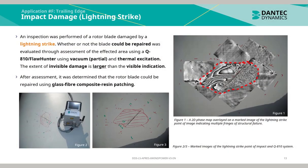Impact damage caused via a lightning strike to the trailing edge: an inspection was performed of a rotor blade damaged by a lightning strike. Whether or not the blade could be repaired was evaluated through assessment of the affected area using a Q810 floor hunter with vacuum partial and thermal excitation. The extent of visible damage is larger than the visible marked indication. After assessment, it was determined that the rotor blade could be repaired using glass fibre composite resin patching. Figure 1 shows a 2D phase map overlaid on a marked image of the lightning strike point of impact, indicating multiple fringes of structural failure. Figures 2 and 3 show marked images of the lightning strike point of impact and the Q810 system.